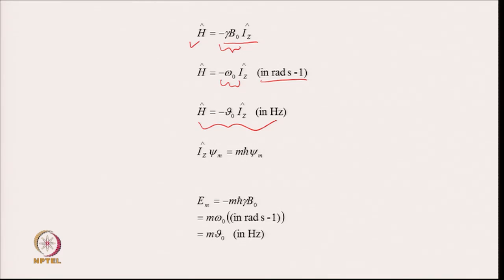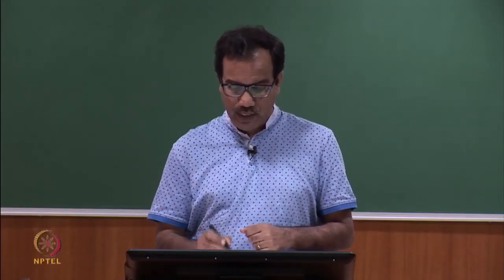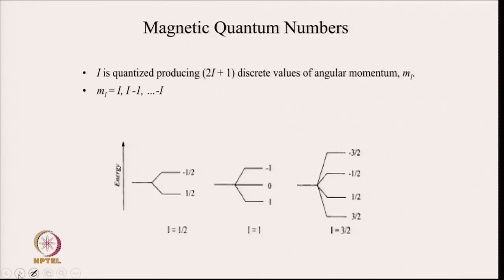If I apply the I_z operator onto a wave function, what I will get is mℏψ_m. This is the way you can express the energy of the mth spin level. Energy of the mth spin level is −mℏγB₀, and in radian-per-second units it is mω₀, and in hertz units it is mν₀. I is quantized and that gives 2I+1 discrete values of angular momentum, with m ranging from I to −I. So if I = 1/2, there will be 2 values of m: +1/2 and −1/2.